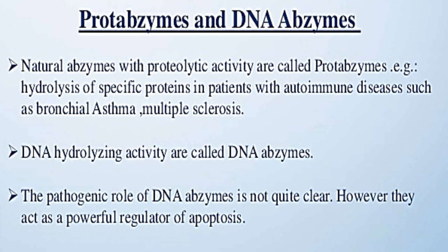Natural abzymes with proteolytic activity are called protabzymes. An example is hydrolysis of specific proteins in patients with autoimmune diseases such as bronchial asthma and multiple sclerosis. Abzymes with DNA hydrolyzing activity are called DNA abzymes. The pathogenic role of DNA abzymes is not quite clear; however, they act as a powerful regulator of apoptosis.